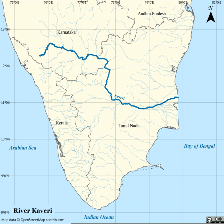Originating in the foothills of the Western Ghats at Talikavari, Kodagu in Karnataka, it flows generally south and east through Karnataka and Tamil Nadu and across the southern Deccan Plateau, through the southeastern lowlands, emptying into the Bay of Bengal through two principal mouths in Poompuhar, Tamil Nadu. The Kaveri Delta forms one of the most fertile regions in the country.